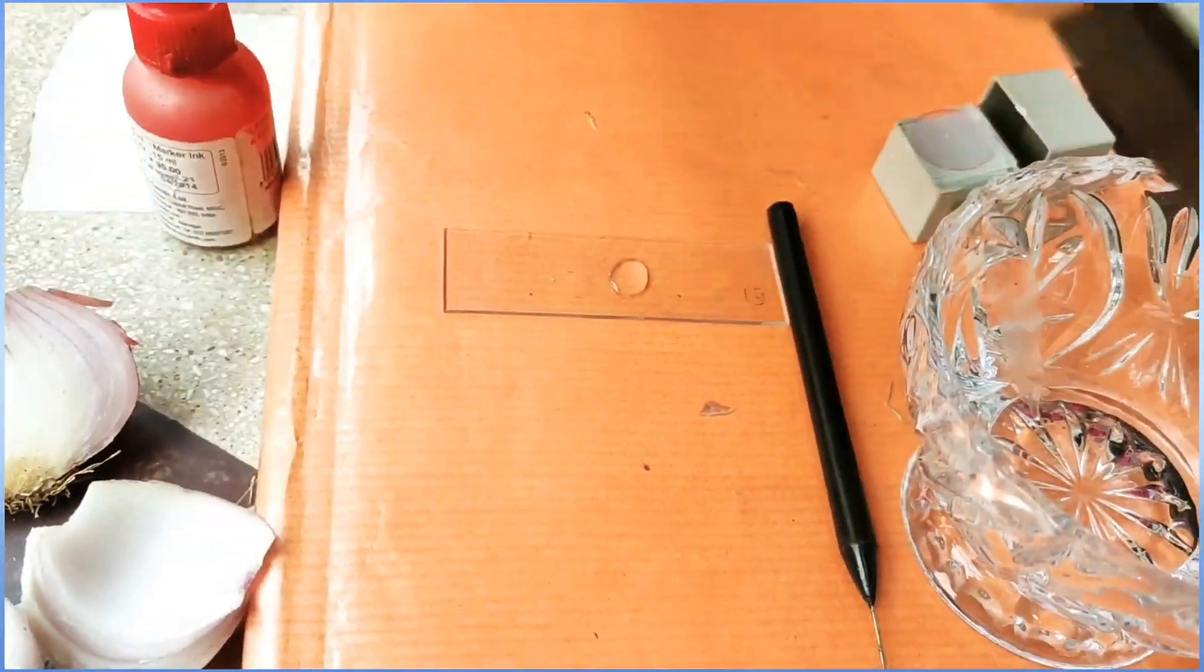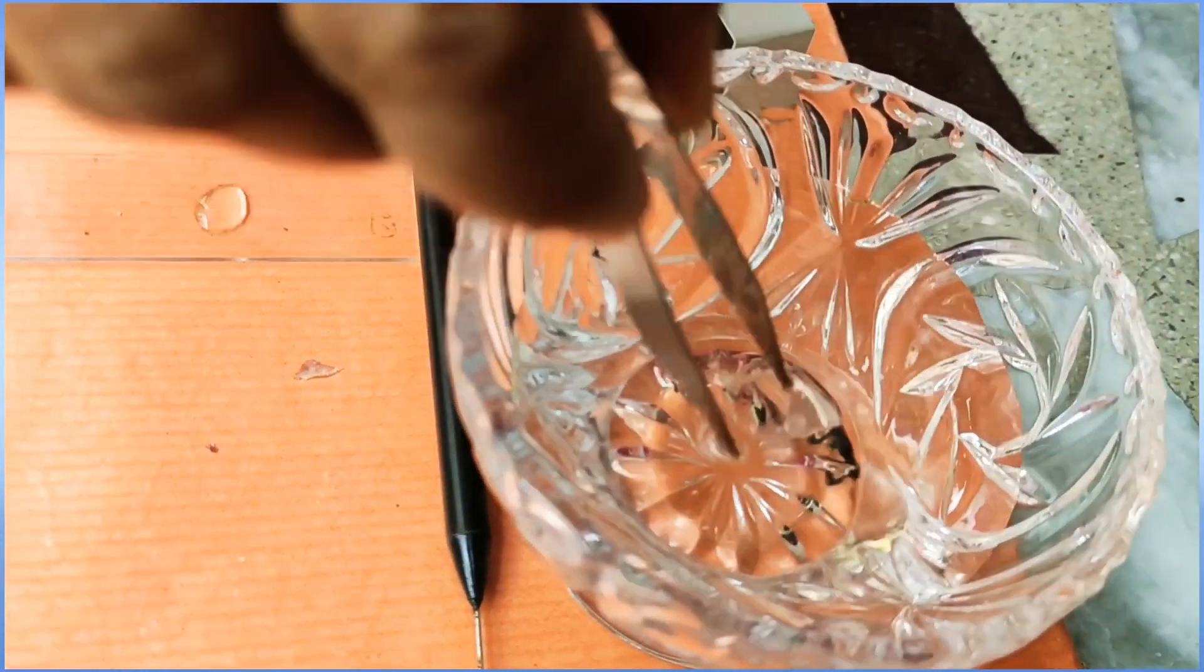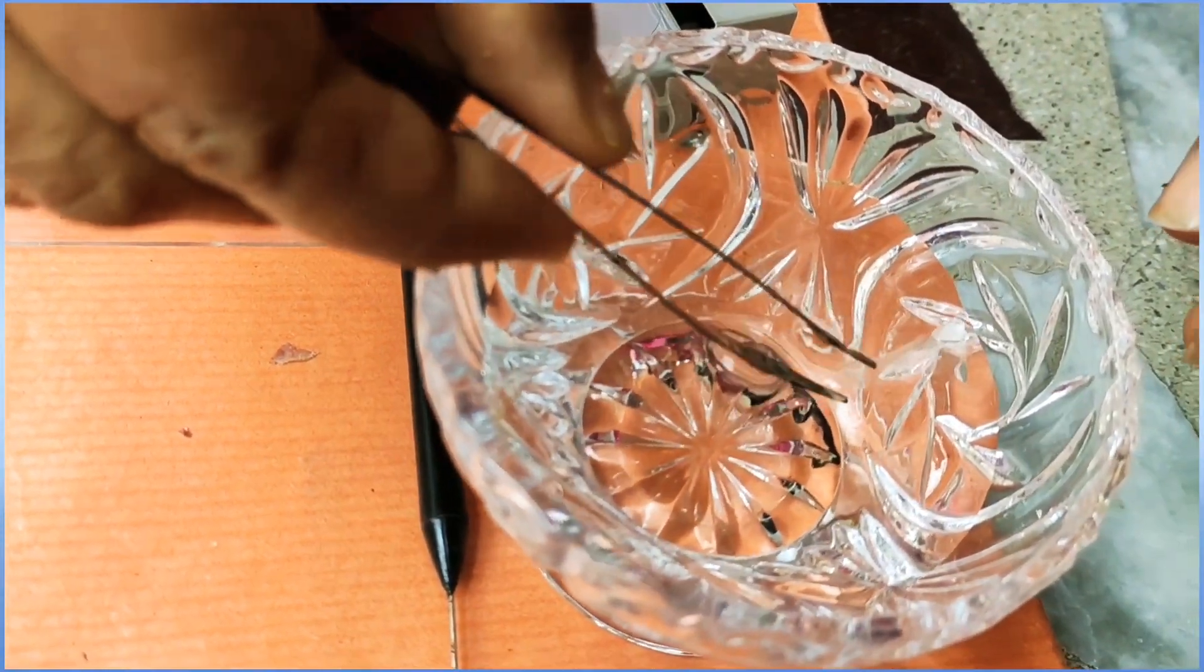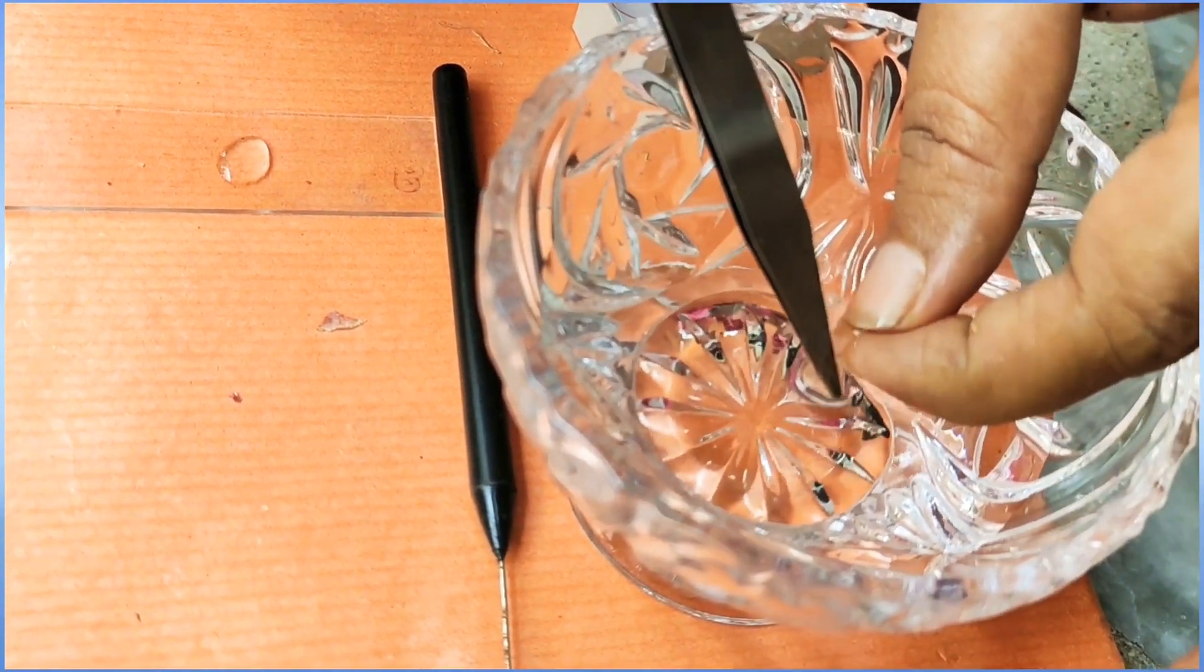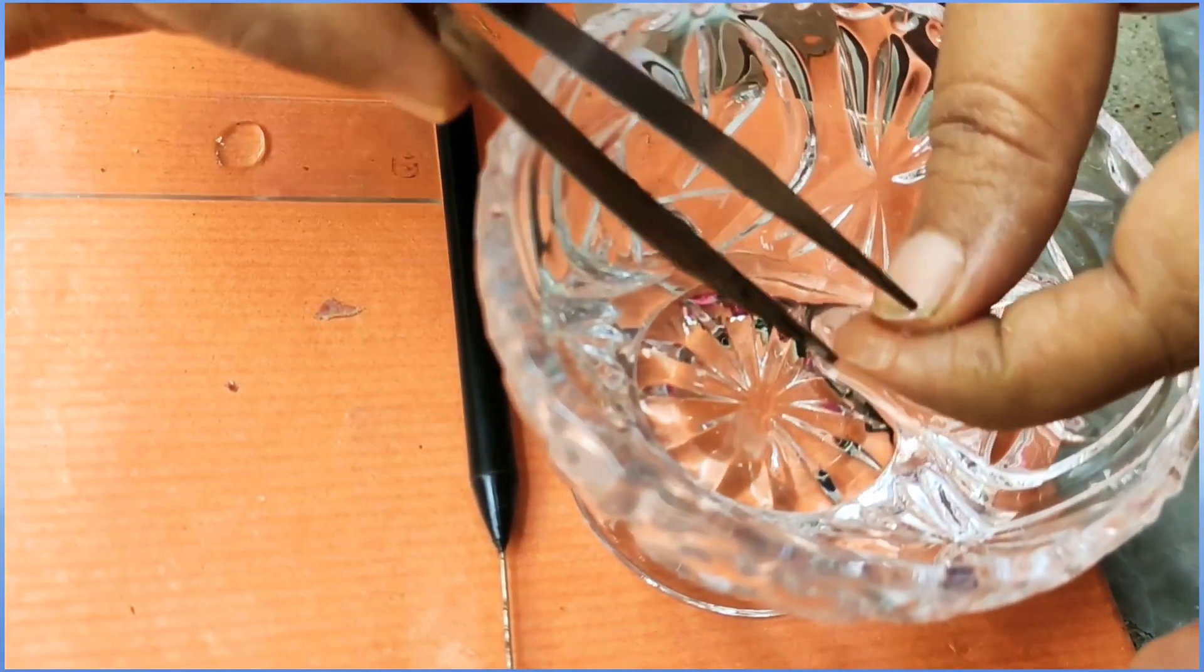And then what you need to do is that you have to take this peel. From this peel you have to take out a small section, so the peel is big, so let us see. We can tear a small piece of the peel from this.